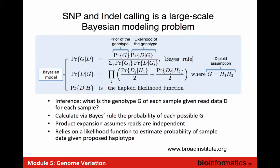This is the underlying algorithm in GATK - the actual calculation to predict whether a position is a variant and how likely it is. Given all the reads at a given position, you calculate the probability of a genotype - the probability that it's different from the reference - and that probability is converted into a score used downstream.